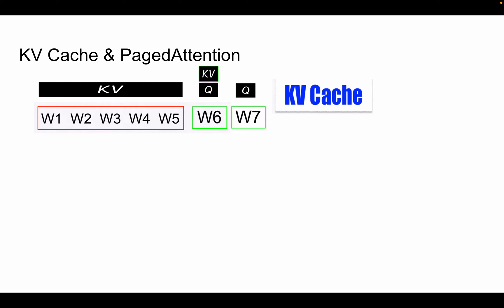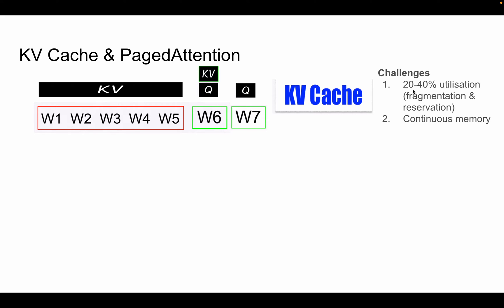There are a few challenges in KV cache, identified by the authors of paged attention. It was observed that only 20 to 40% of the memory was being utilized in the KV cache. GPUs are very costly, and if we're only using 20 to 40% utilization, being at 80 or 90% would be far better — we're paying for the memory but not making use of the extra capacity. Their experiments revealed two main reasons: fragmentation and reservation.